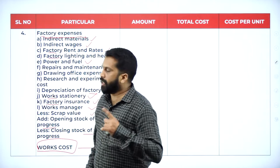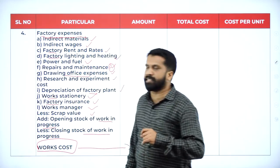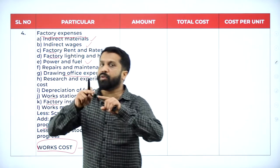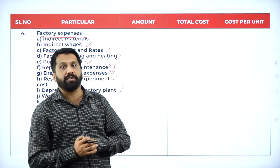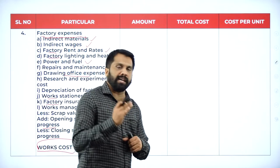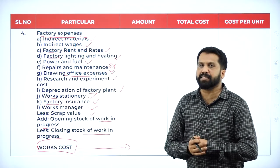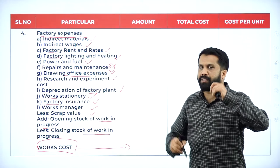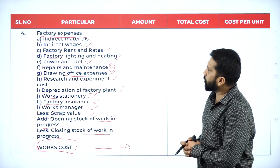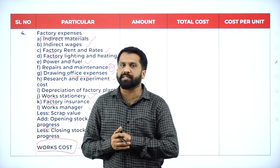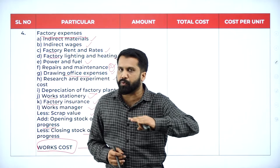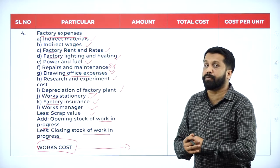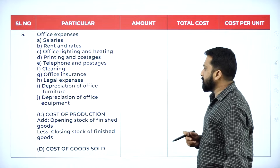Remember: drawing office expenses come under factory cost. A drawing officer makes the production plan — that plan is called drawing office expenses. Also remember: less scrap value, add opening stock of work in progress, less closing stock of work in progress. Whatever you get after all factory expenses is called work cost. So prime cost plus all factory expenses, adjusted for work in progress, gives you work cost.